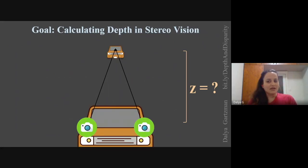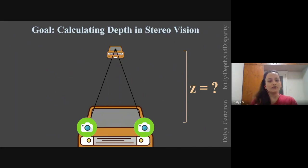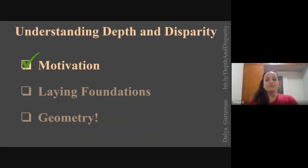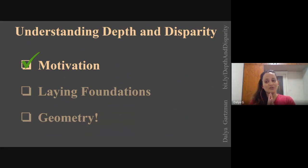Why would we even care about calculating depth? For example, if you are driving in an autonomous or semi-autonomous car, you'd want to know the distance to the car in front of you. The computer vision system in your car with multiple cameras would calculate the depth of any object in front of you. Our goal today is to understand depth and disparity, and then do some geometry.